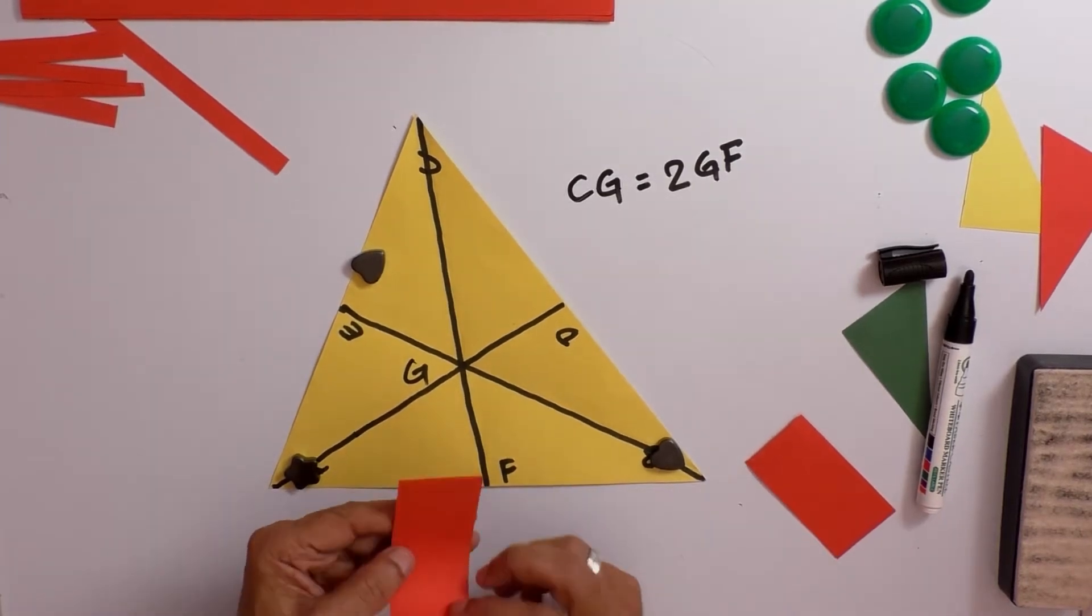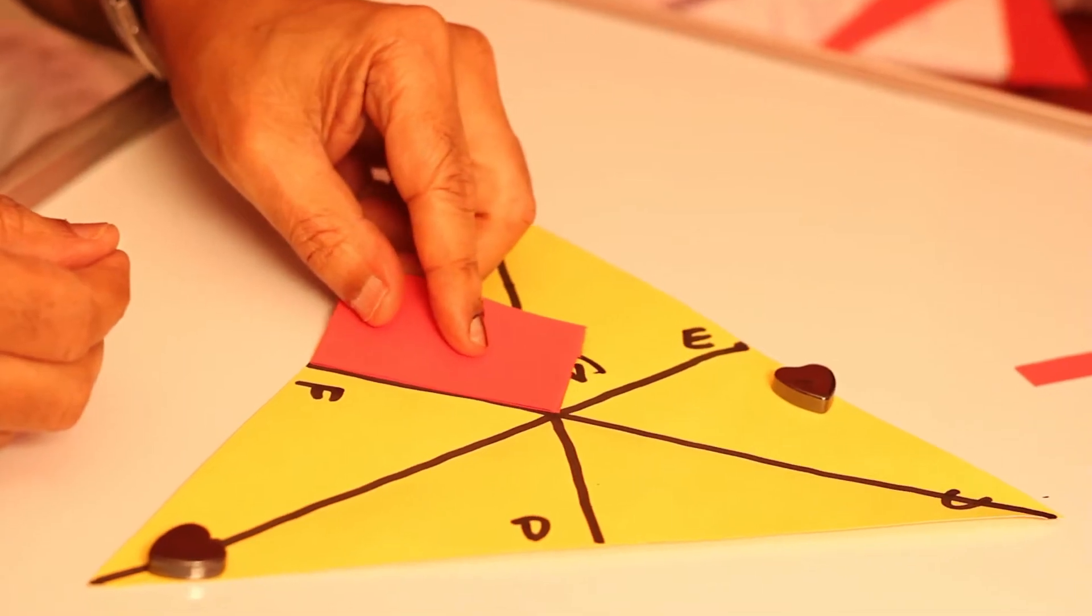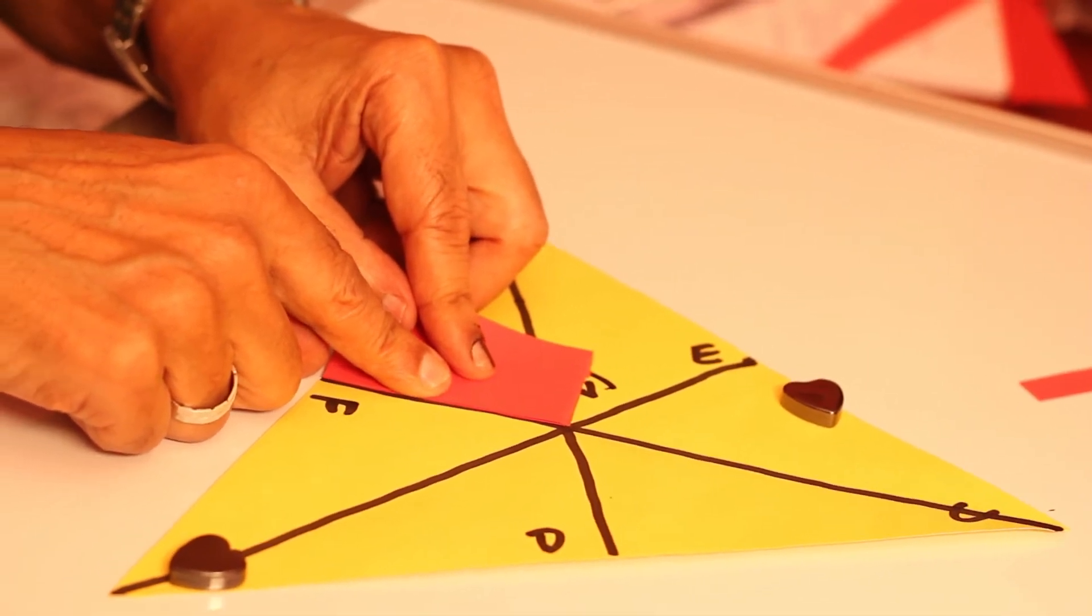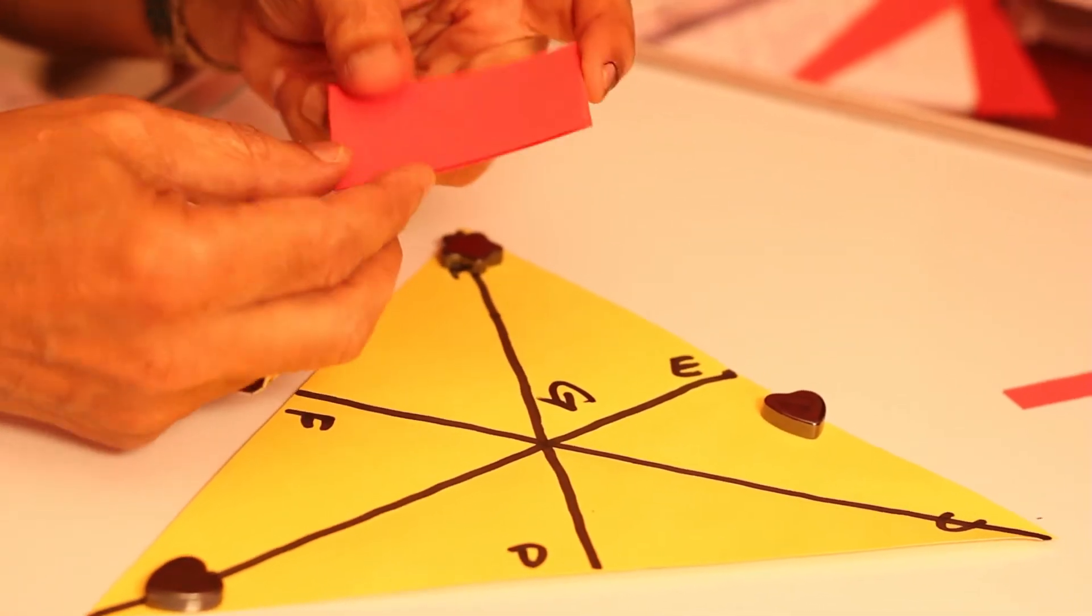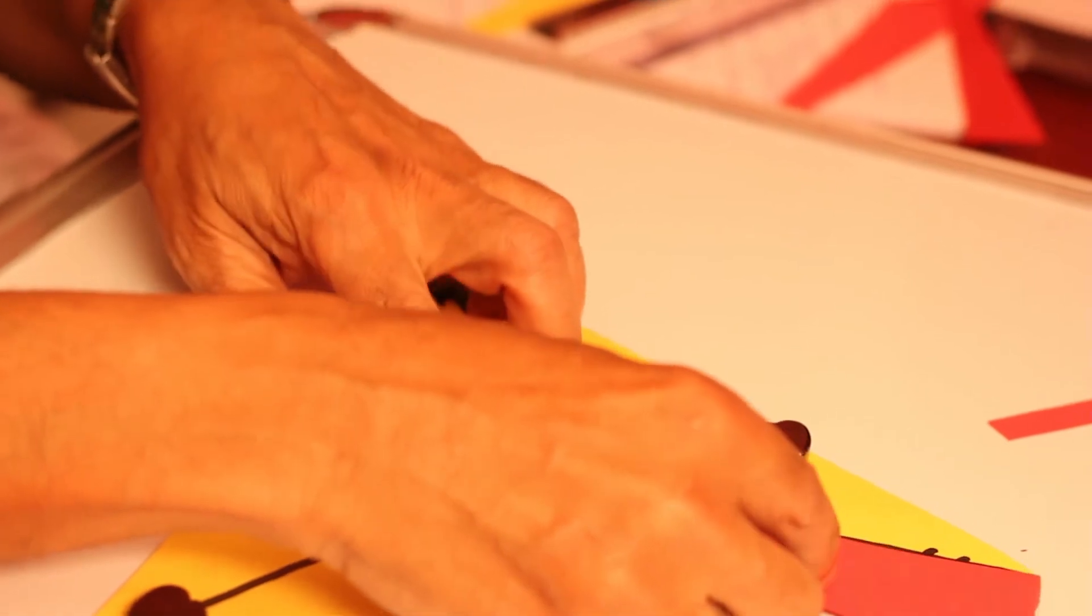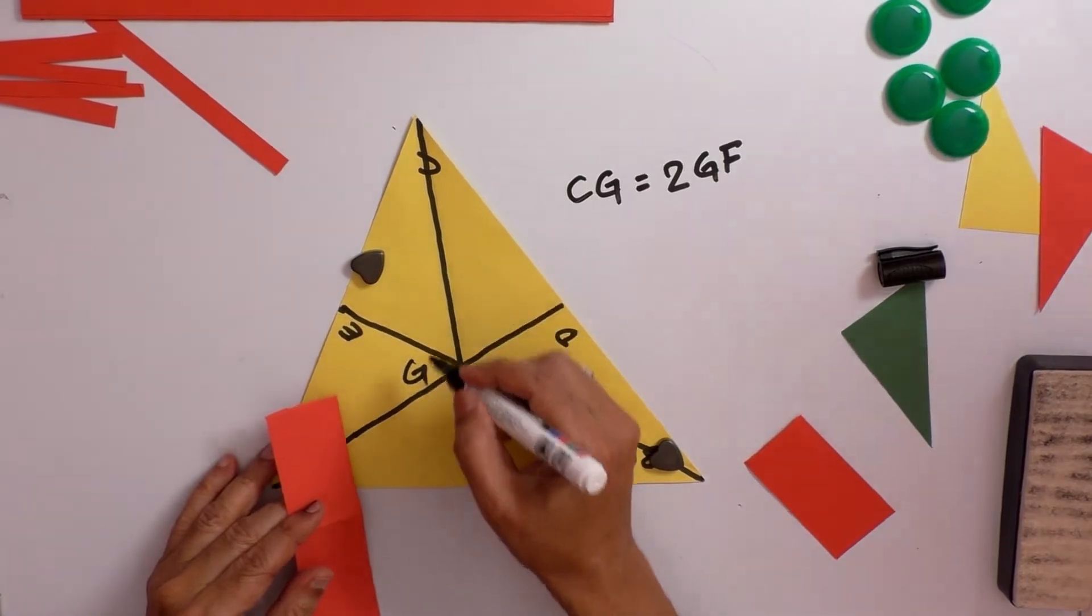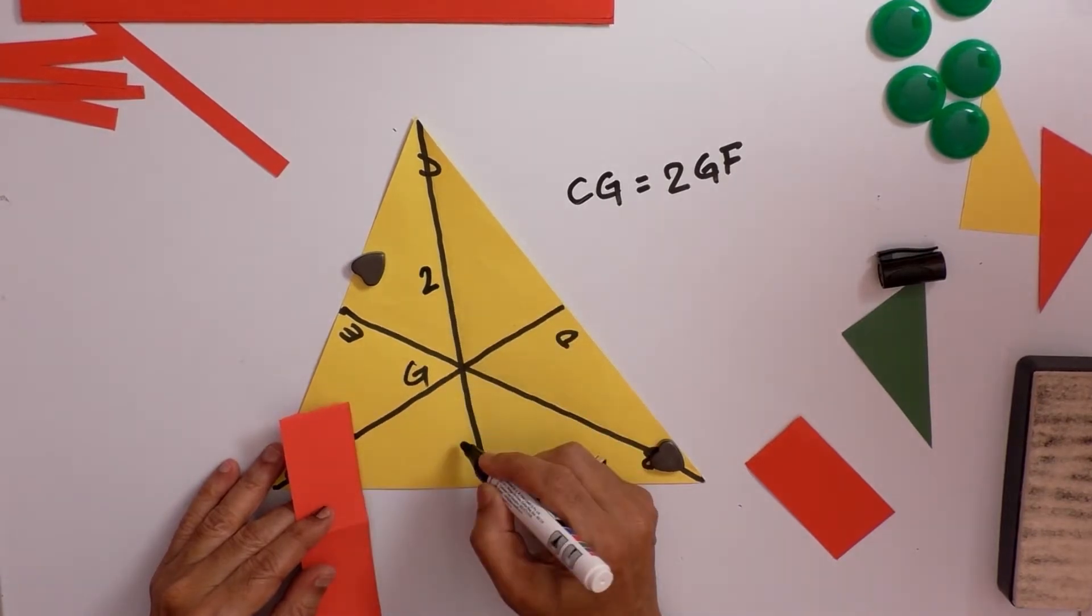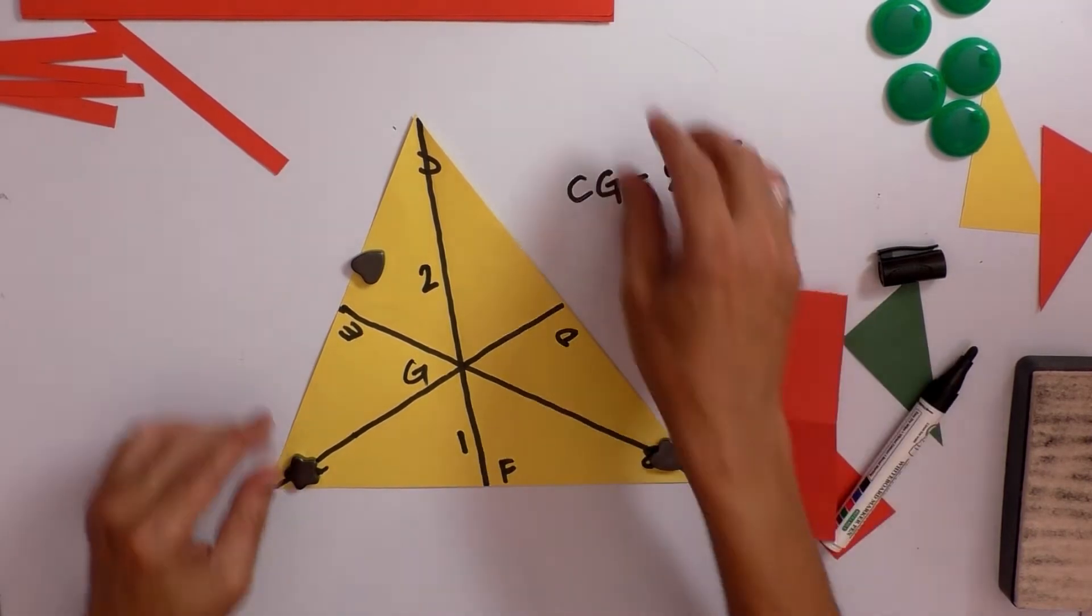Now we have to prove that CG is twice the size of GF. That means we make this into two halves, so this is half the size of CG. Now you place it, you will find that this is one part and this portion is two. So the centroid G is dividing the median in the ratio of 2 is to 1.